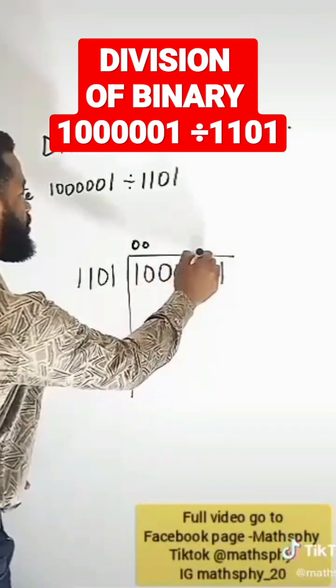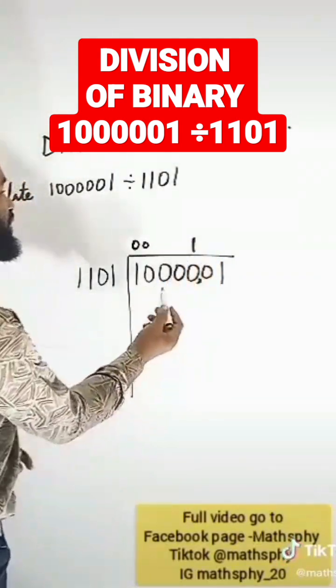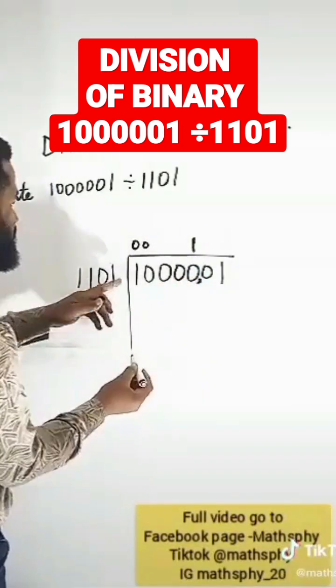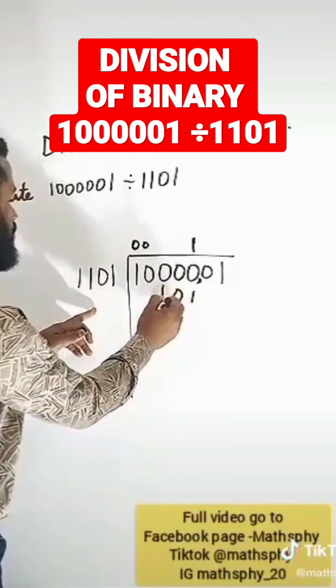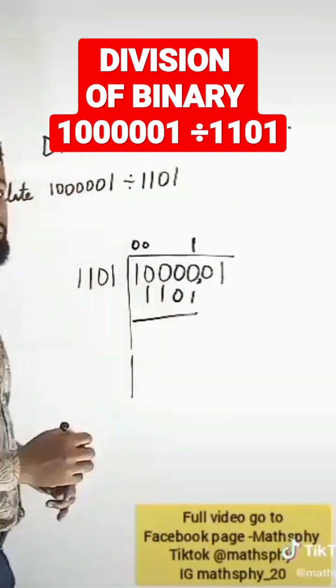What should I do? I'll put 1 here, under this. Then normally, 1 times this is going to be 1101. So at this point, what do I do?